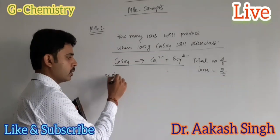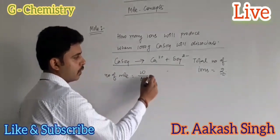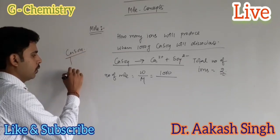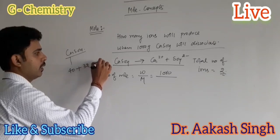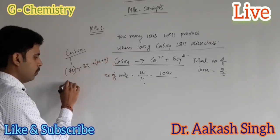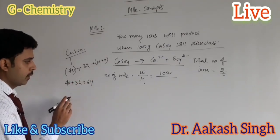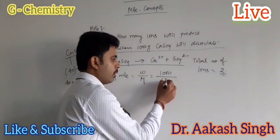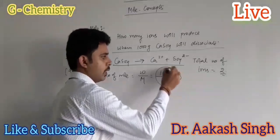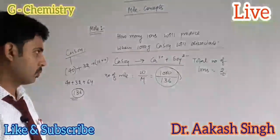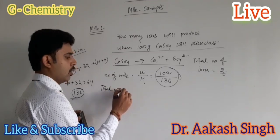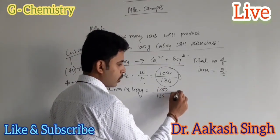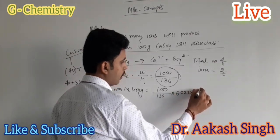Calculate number of moles first: moles = W upon M. W is 1000 and M for CaSO₄ is 40 for calcium, 32 for sulfur, and 16 into 4 for oxygen, giving 40 plus 32 plus 64 equals 136. So moles = 1000 upon 136. Total ions in 1000 grams equals 1000 upon 136 into 6.022 into 10 to the power 23 into 2.